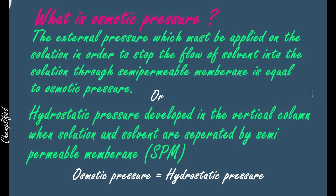This is our colligative property — osmotic pressure. There are two definitions; one is easy, the other is difficult. The easy one: the external pressure which must be applied on the solution in order to stop the flow of solvent into the solution through the semi-permeable membrane is equal to osmotic pressure. You apply an external pressure to stop the flow of solvent molecules into the solution, and that external pressure equals osmotic pressure.